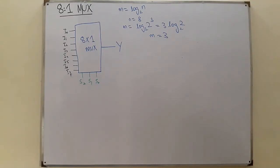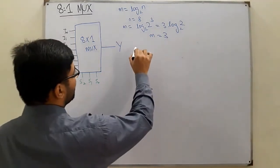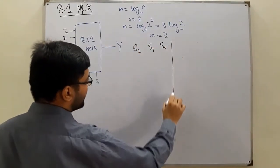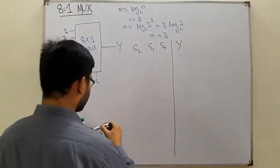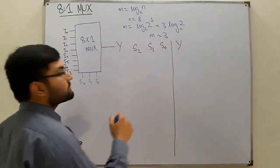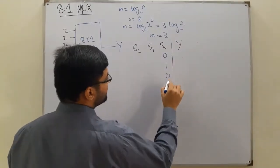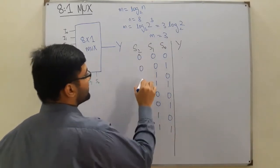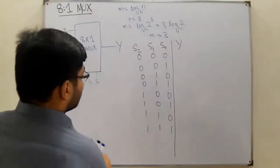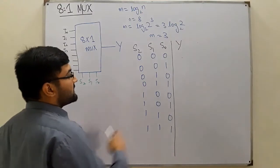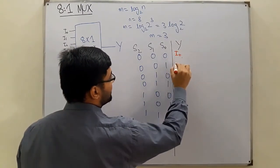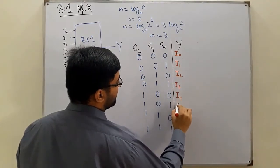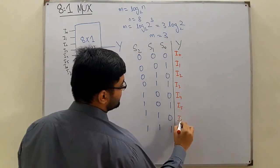Now drawing the truth table with S2, S1, S0, and function Y. Filling it up: rows zero through seven. The corresponding output selected is: I0, I1, I2, I3, I4, I5, I6, and I7 — one for each combination of select lines.